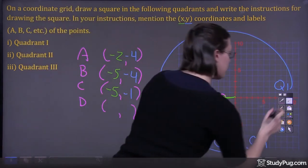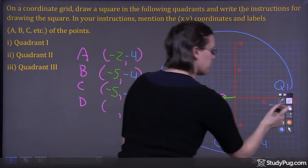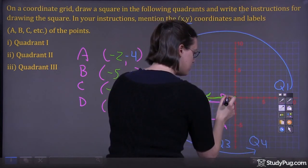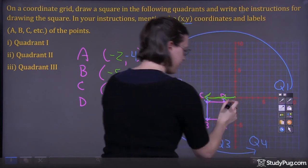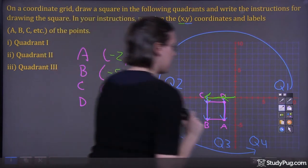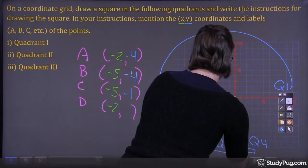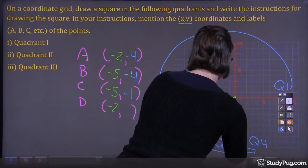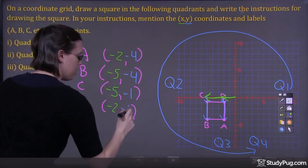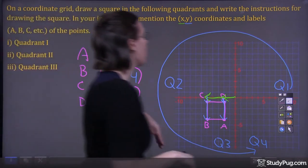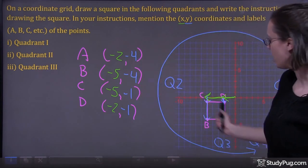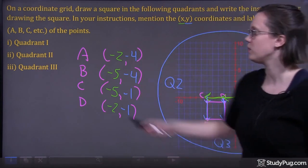Now let's focus on point D, our last point. We're moving 1, 2 to the left — negative 2. And we're moving 1 down — negative 1. So D is (-2, -1). There are our coordinates for our square in quadrant 3.